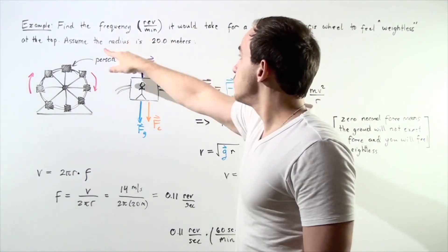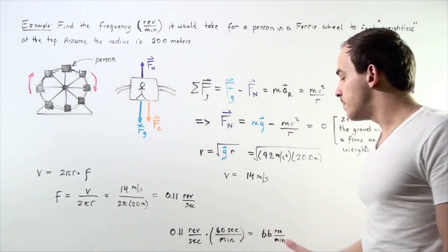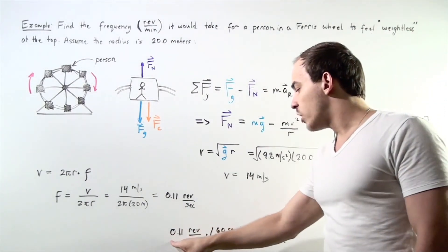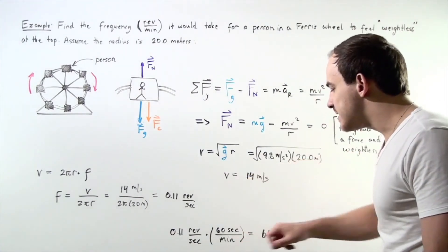But we're asked to find the frequency in revolutions per minute. So that means we need to do a simple conversion: 0.11 revs per second multiplied by 60 seconds in a minute.